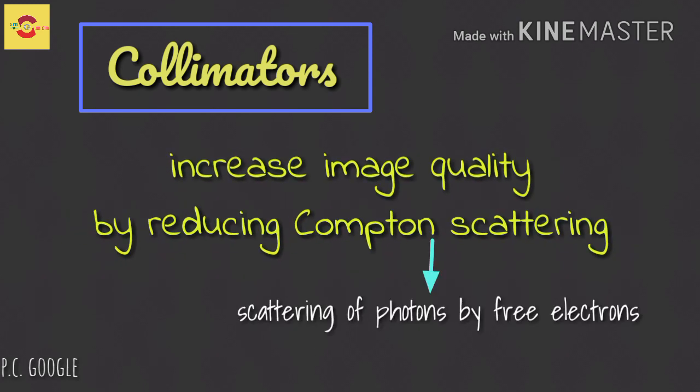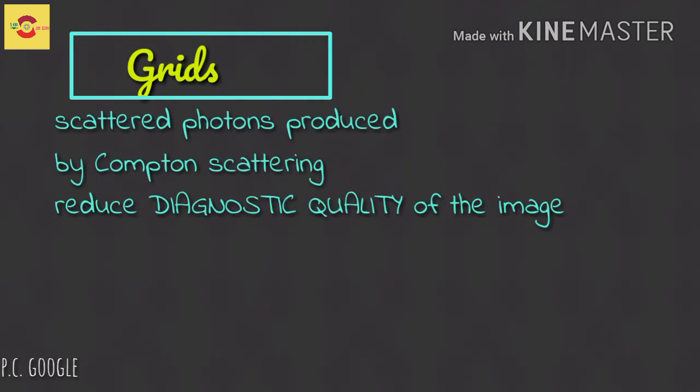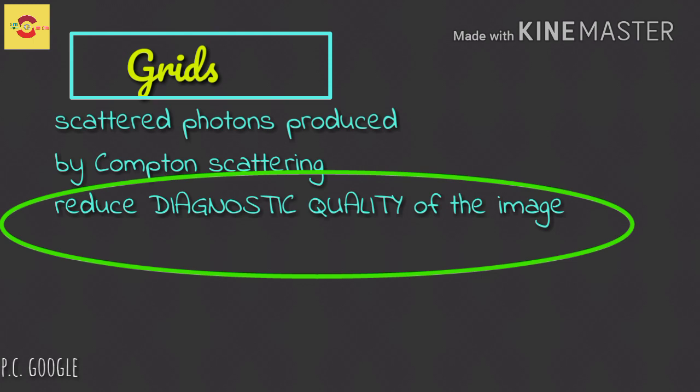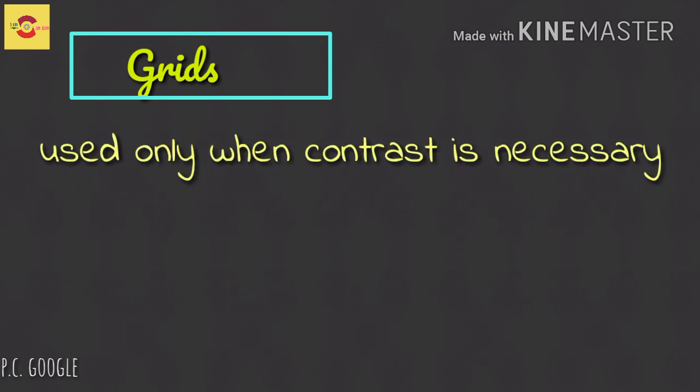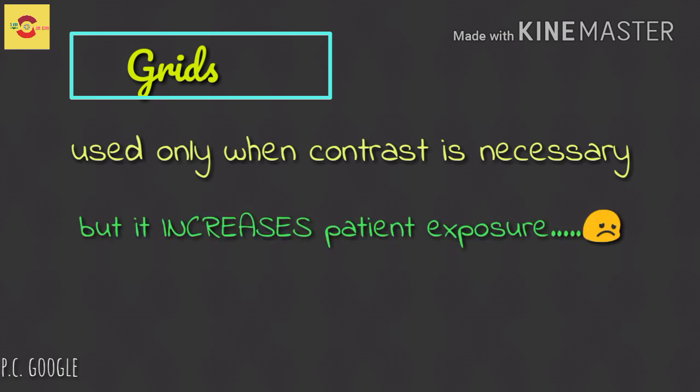Finally, what are grids? Scattered photons produced by Compton scattering result in formation of dark areas in radiographs. They reduce the diagnostic quality of the radiographic image. Grids are used to counter this and are used only when contrast is necessary, as they reduce film fog. But grids increase exposure time by two times and patient exposure is also increased.